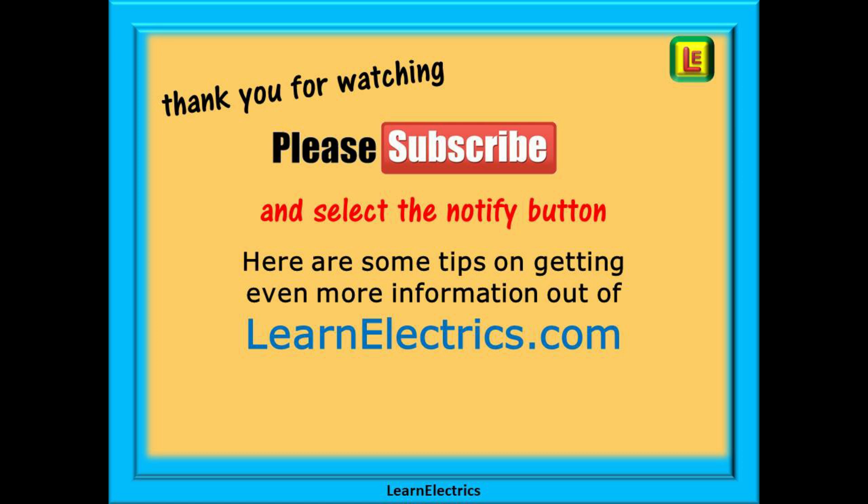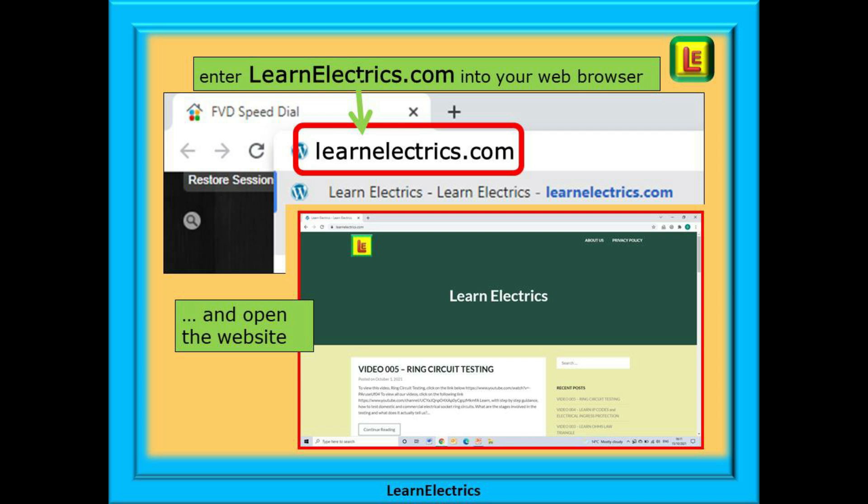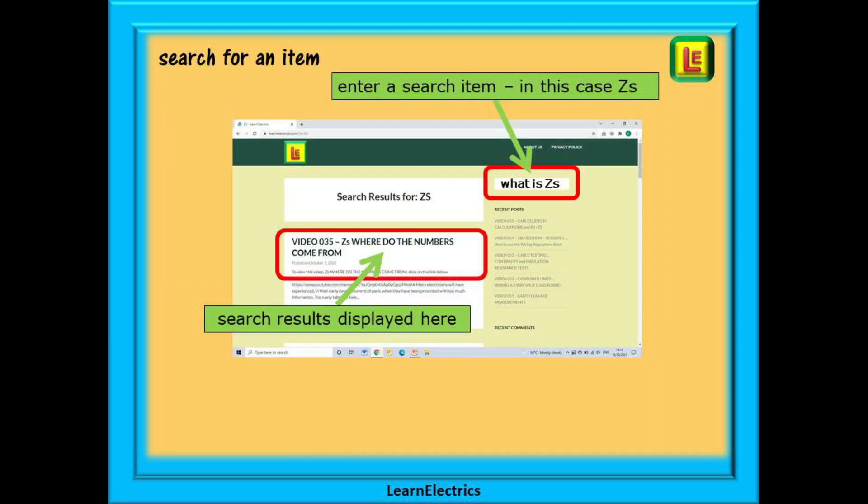Here are some tips on getting even more information and help out of LearnElectrics.com. At your web browser, enter LearnElectrics.com into the search bar. Select LearnElectrics.com from the choices offered, and the website, as shown, will open up for you. You now have a couple of choices. You can search for a help item or any video by entering a keyword into the search bar on the right. Click on Return, and all the help files and videos with that word in the title will be listed for you.